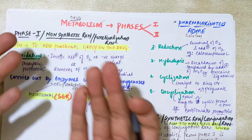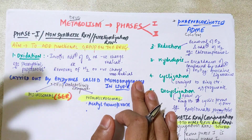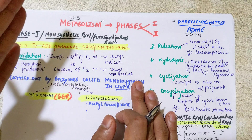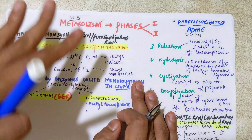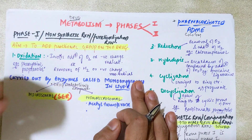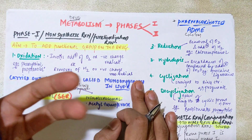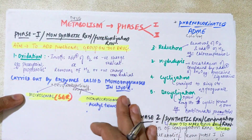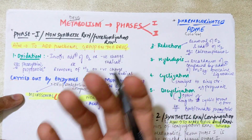In one minute, let me revise what metabolism is. As covered in the previous video, metabolism is a biotransformation — another name for the chemical alteration of the drug in a living organism. The main aim of metabolism is to convert a lipid-soluble drug into a water-soluble, polar drug so that it can be excreted out from the kidney easily.